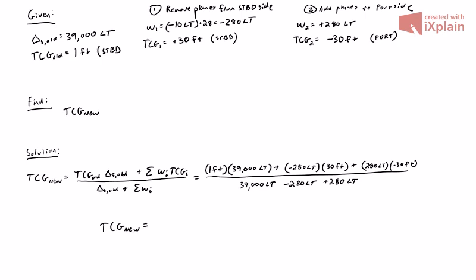The new transverse center of gravity is 0.57 feet, and that's a positive number, so that is starboard. That means our ship used to have a heavier list to starboard. Now we're still listing to starboard, but just slightly less than before because of moving those 28 aircraft.